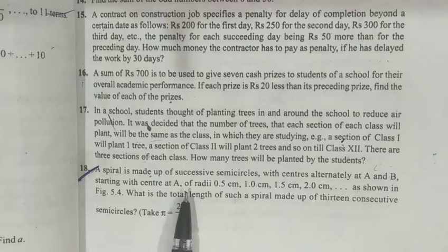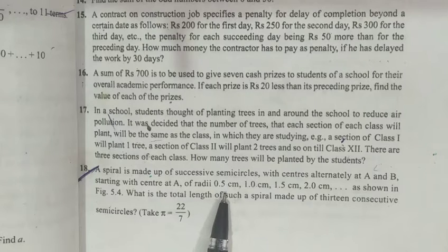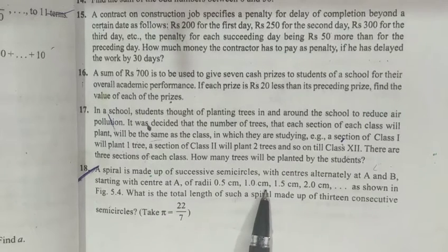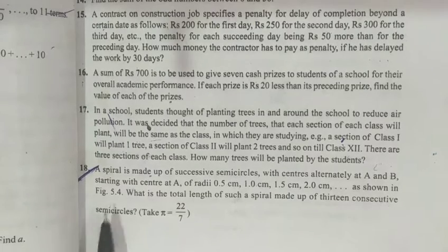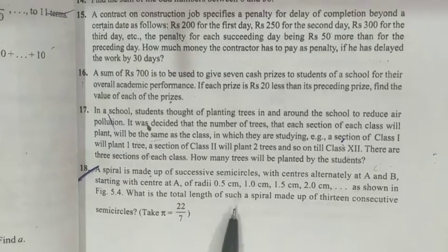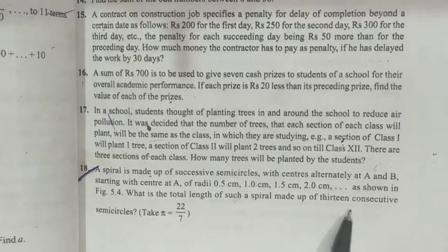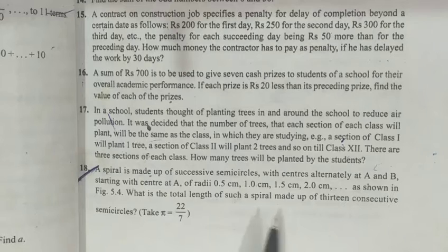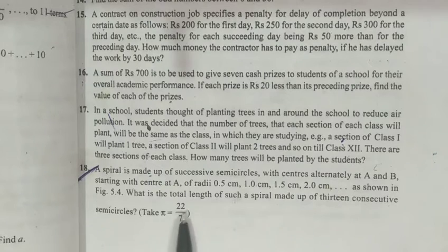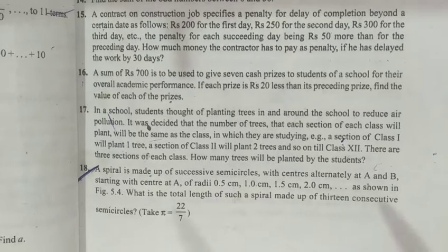Starting with center at A, radius will be 0.5 cm, after that 1 cm, 1.5, 2 cm, so on. As shown in the figure. What is the total length of such a spiral made up of 13 consecutive semicircles? We need to find the total length. Length of a circle means circumference.